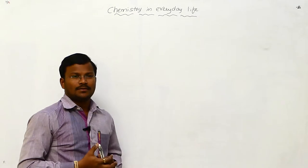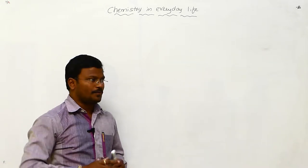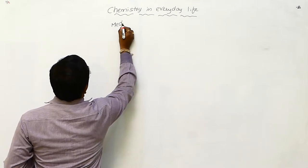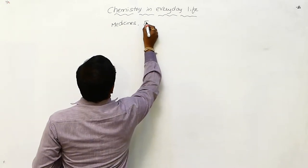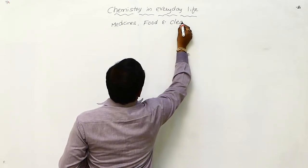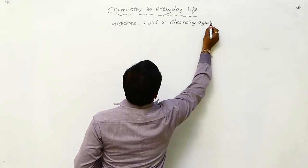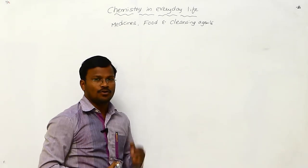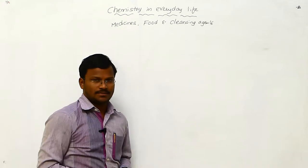In this chapter we are going to explain important chemical applications of three important compounds: drugs or medicines, food and food preservatives, and cleansing agents. These are widely important to human beings.